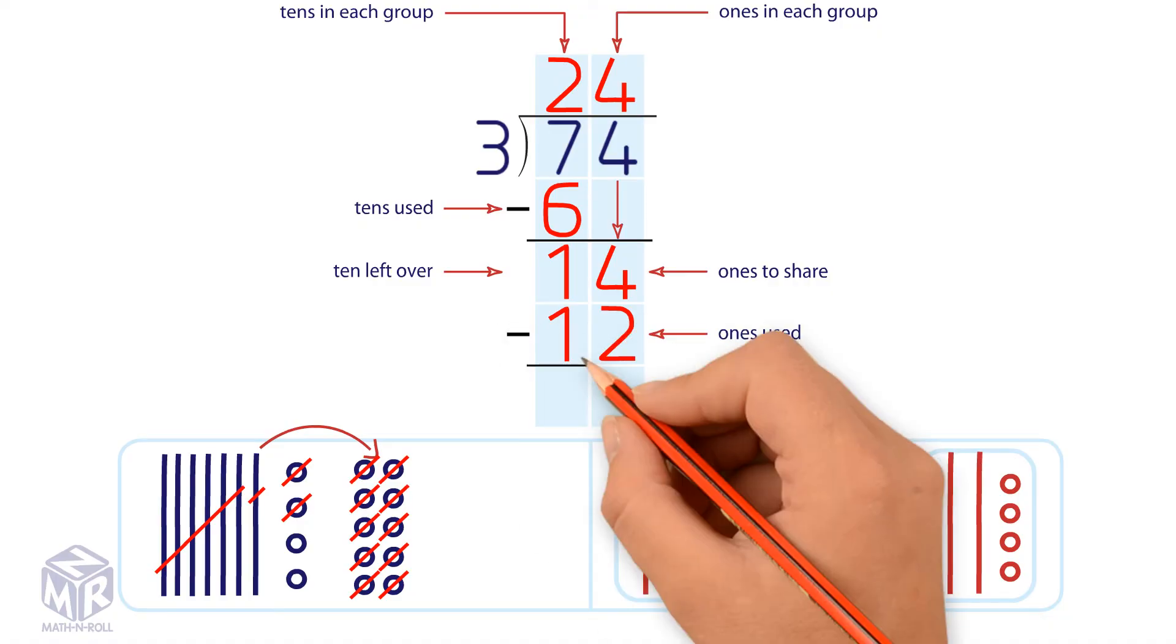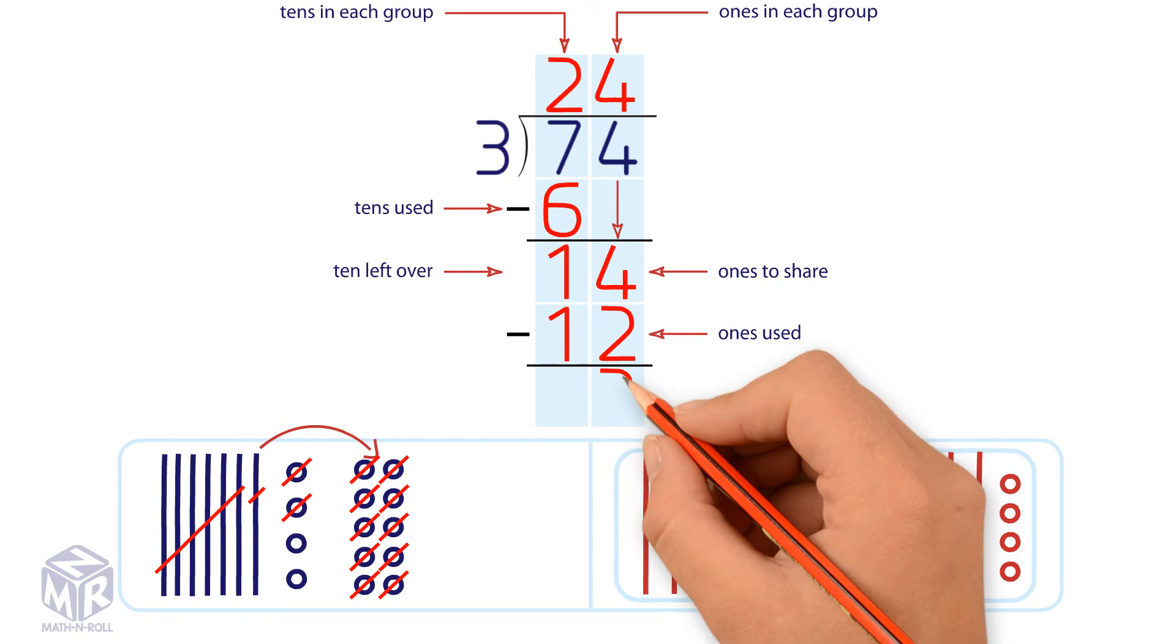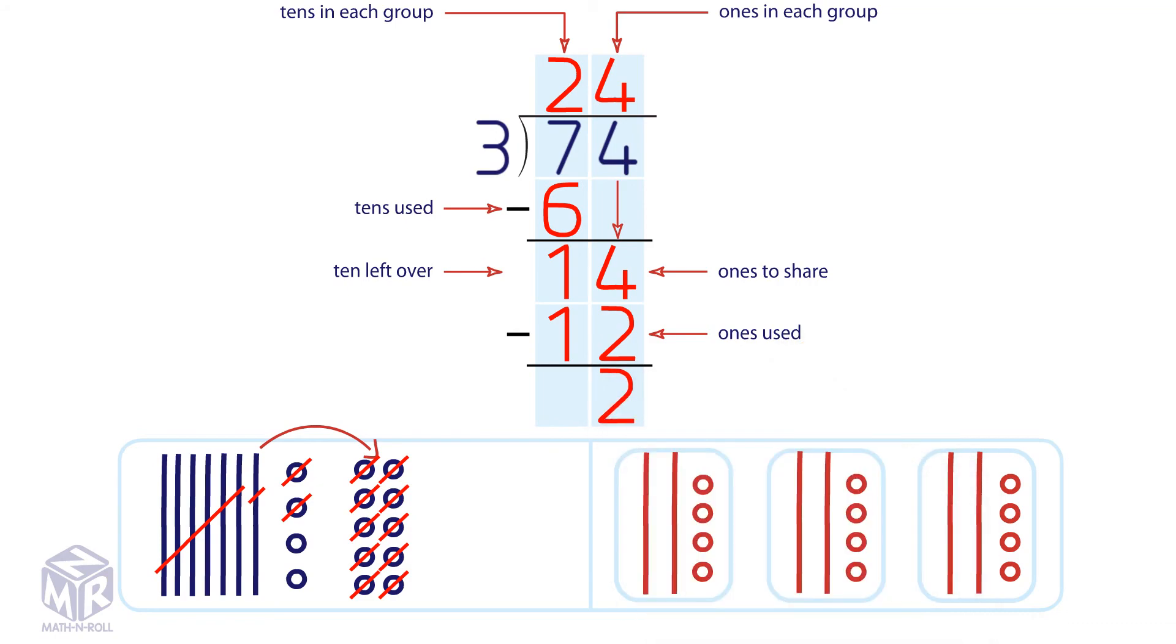We subtract 12 from 14 and we get 2. There are 2 ones left over. So for 74 divided by 3, the whole number quotient is 24 and the remainder is 2.